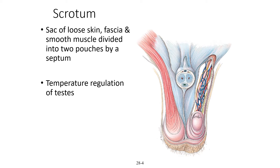Let's look at some of these structures in more detail, starting with the scrotum. The scrotum is a sack of loose skin containing fascia and smooth muscle, which allows it to be divided into two pouches with a septum. Its major purpose is to serve as a temperature regulator for the testes. Sperm survival requires two to three degrees lower than body temperature. The smooth muscle within the scrotum can elevate the testes if the weather is cold, and also causes the testes to elevate with arousal. If it's too hot, warmth will reverse this process and cause the smooth muscle to relax.